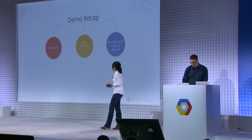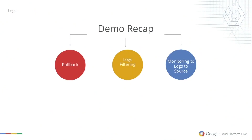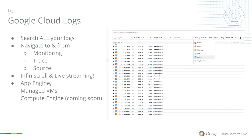To recap: we showed how to roll back production to a previous stable version when there's an error in your current deployment. We showed how to filter logs from all the versions and all the instances of your deployment. And we seamlessly navigated from monitoring to logs to source code and fixed the problem right in the console. Cloud Logs lets you search through all your logs in a single console, navigate simply from monitoring, trace, and source. There's infinite scroll, live streaming — which is tail -f for all your logs — and it's available for App Engine, Managed VMs, and Compute Engine coming soon.